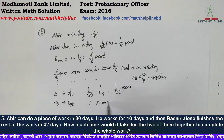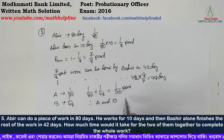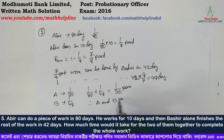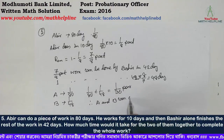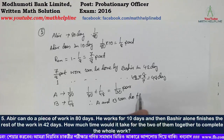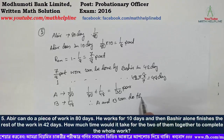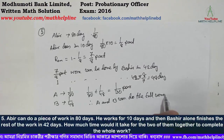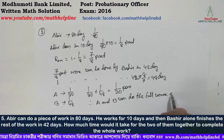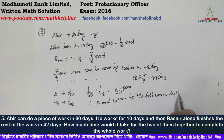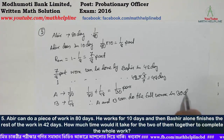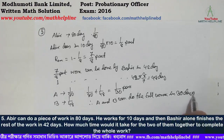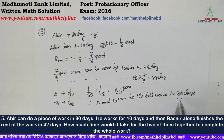Abir and Bossier can do the full work together in 30 days. So the answer is 30 days.